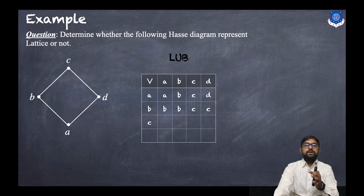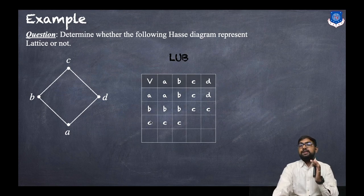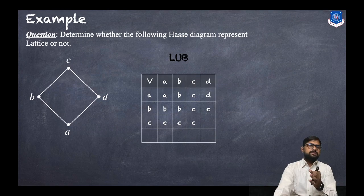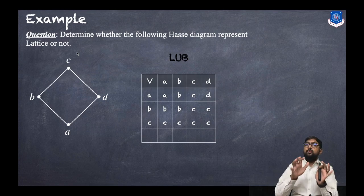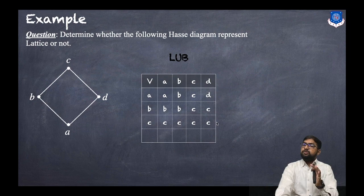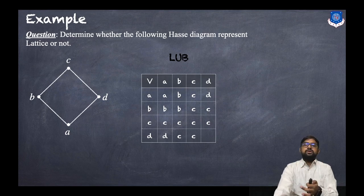For c and a it is c, c and b it is c, c and c it is c, and c and d is c — since c is the upper bound of the whole graph, whenever c is involved the answer is c. For d and a it is d, d and b is c, d and c is c, and d and d is d.